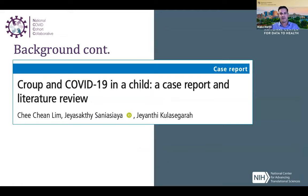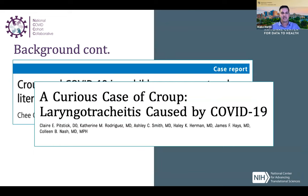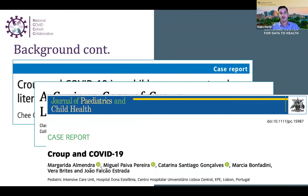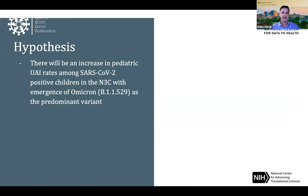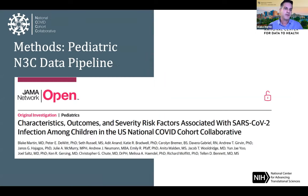The idea of croup in children with COVID is not new — case reports of children with croup testing positive for COVID-19 appeared as far back as 2020 and 2021. Given increasing case reports and the plausible biologic mechanism, our hypothesis was that there would be an increase in pediatric UAI rates among SARS-CoV-2 positive children in N3C with the emergence of Omicron as the predominant variant. Our objective was to identify how many children were developing UAI, describe their demographics and comorbidities, and track changes over time.